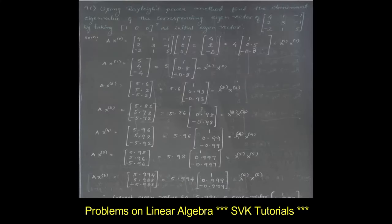Moving on to question 9c: using the Rayleigh Power method, find the dominant eigenvalue and the corresponding eigenvector for matrix A, taking [1, 0, 0] transpose as the initial eigenvector. I have solved this problem separately in a previous video with a shortcut method using a calculator. I multiplied matrix A with the initial vector to get a column matrix, then chose the highest value as the eigenvalue. I continued iterations until the same approximation was obtained compared with the previous iteration.